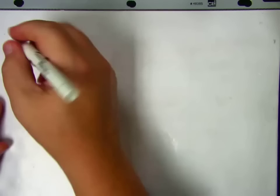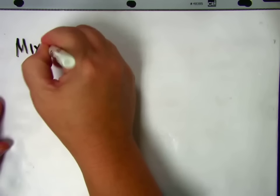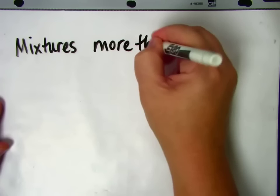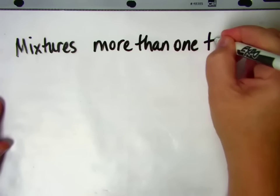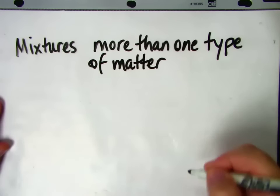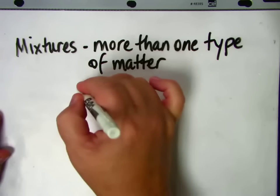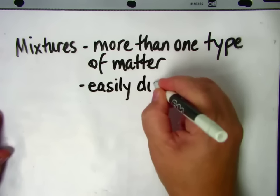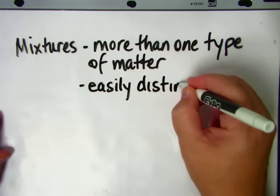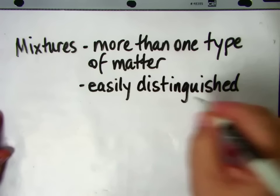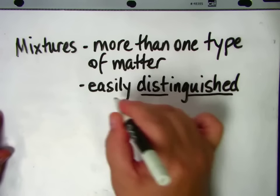Now we're going to talk about mixtures. Mixtures are more than one type of matter, and the other condition for a mixture is that they're easily distinguished. So you can distinguish the different types of matter — that means you can tell them apart, or you could separate them easily.